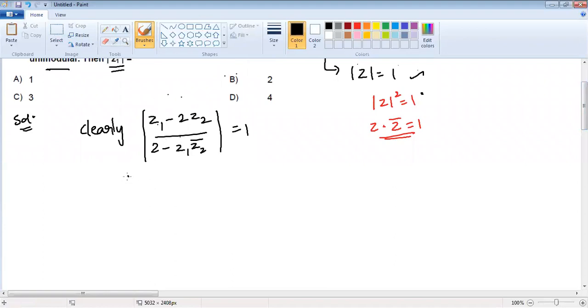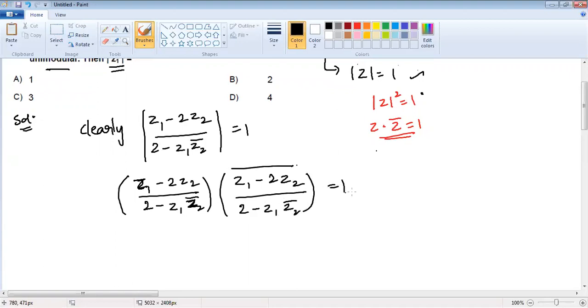Let us apply: (Z1 minus 2Z2) divided by (2 minus Z1 Z2 bar) multiplied by the bar of (Z1 minus 2Z2) divided by (2 minus Z1 Z2 bar) equals 1.